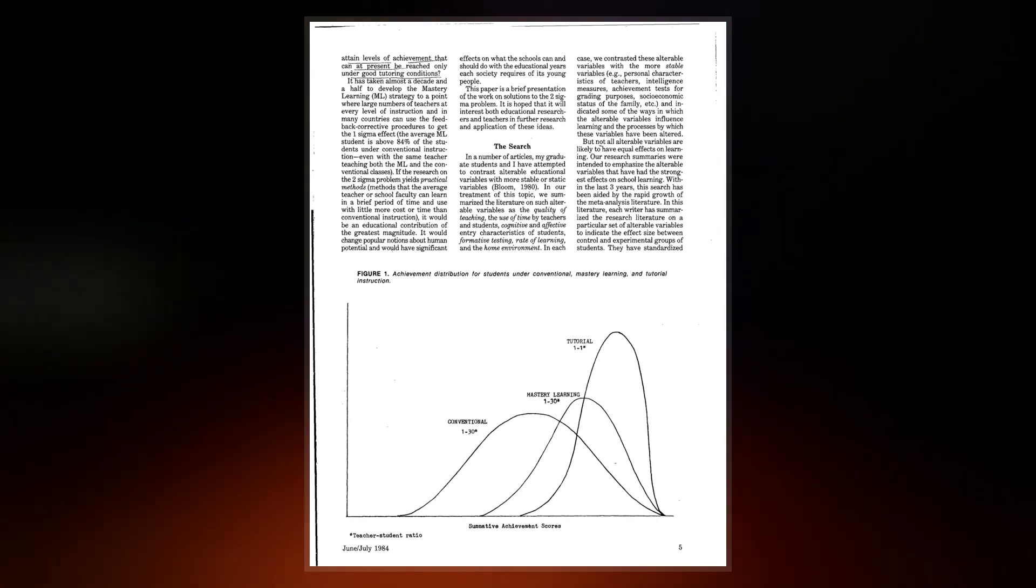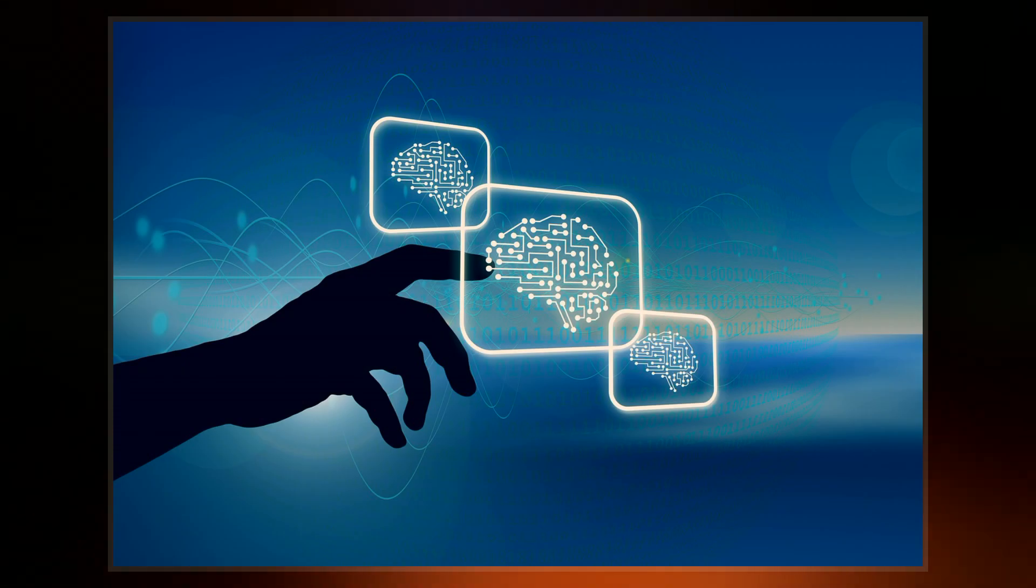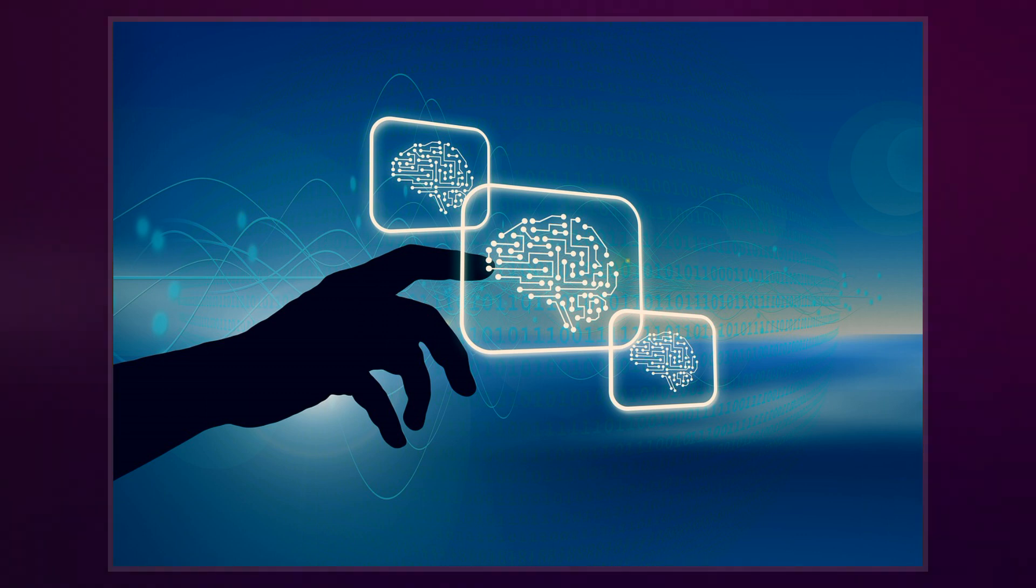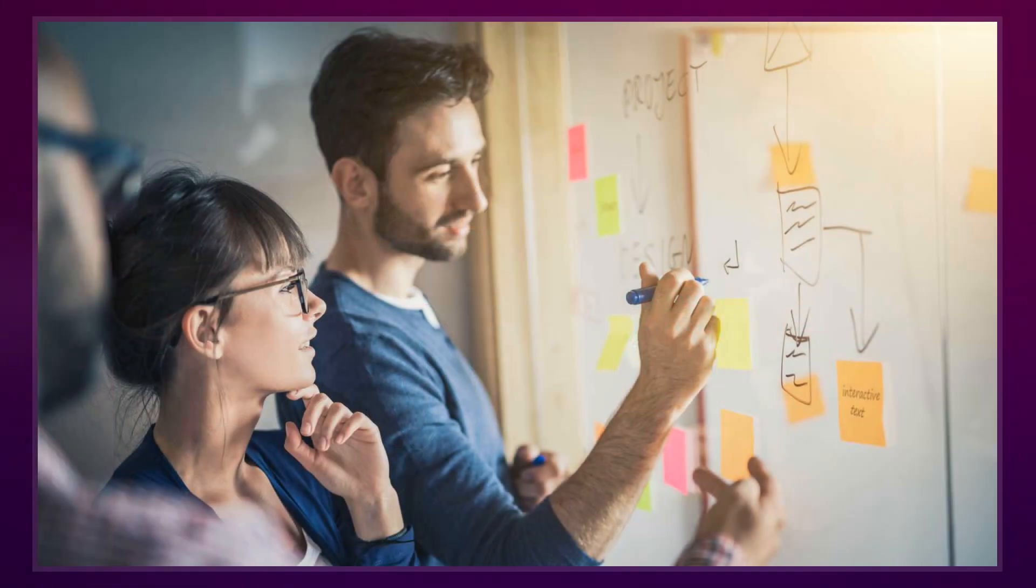That is, the average tutored student was above 98% of the students in the control class. Additionally, the variation of the students' achievement changed: about 90% of the tutored students attained the level of summative achievement reached by only the highest 20% of the control class.